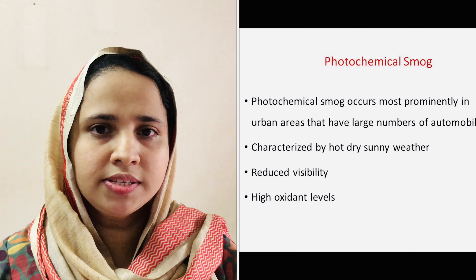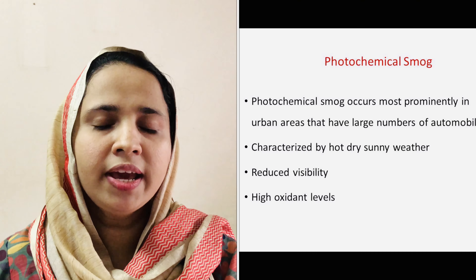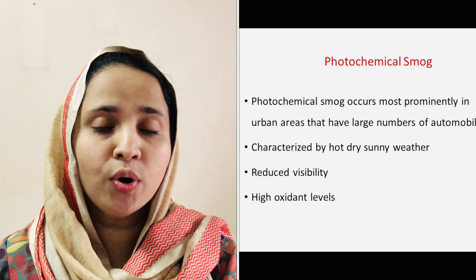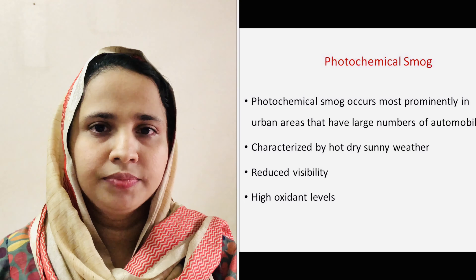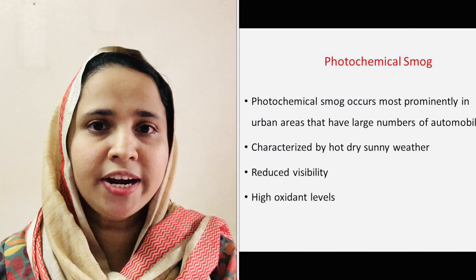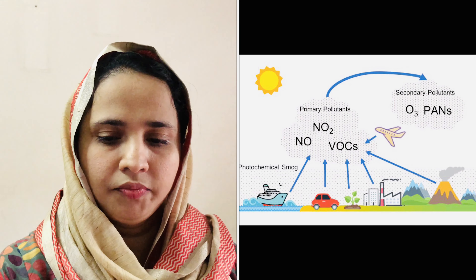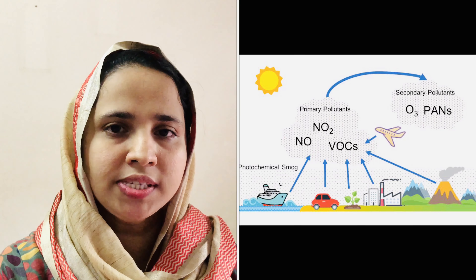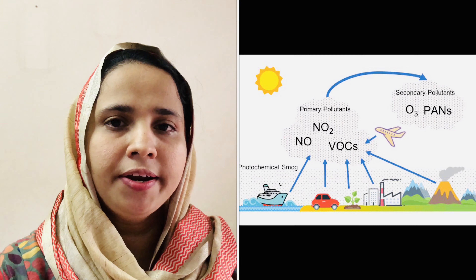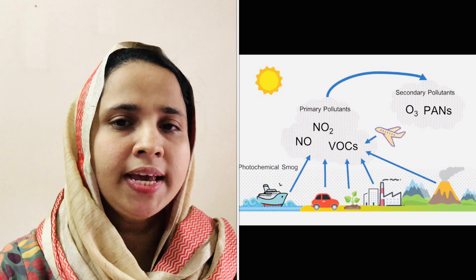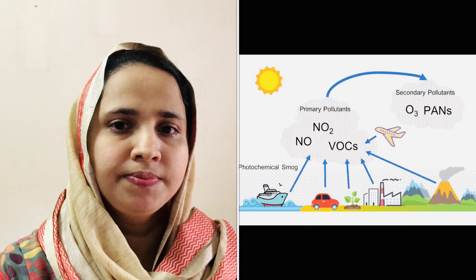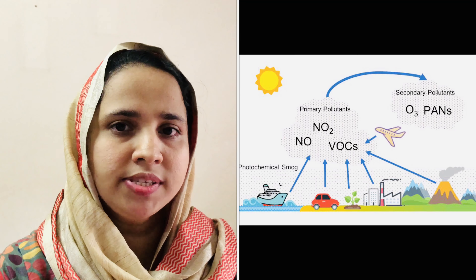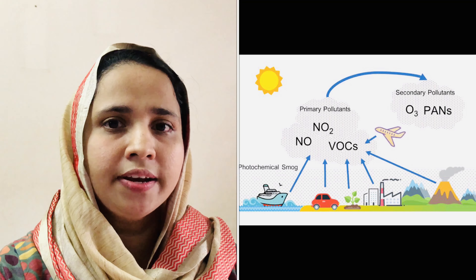Photochemical smog occurs most prominently in urban areas that have a large number of automobiles. They are characterized by hot sunny weather. The components of photochemical smog include nitrogen oxides, ozone, formaldehyde, acrolein, and peroxyacetyl nitrate, along with a number of volatile organic compounds like aldehydes and ketones.